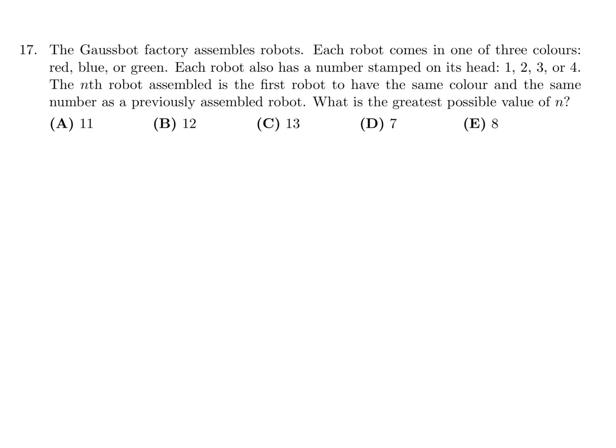The GossBot factory assembles robots. Each robot comes in one of three colors, red, blue, or green. Each robot also has a number stamped on its head, 1, 2, 3, or 4. The nth robot assembled in the first robot is the first robot to have the same color and the same number as previously assembled robot. What is the greatest possible value of n? The greatest possible value? Okay. So we have red, blue, and green. And then we have 1, 2, 3, and 4.